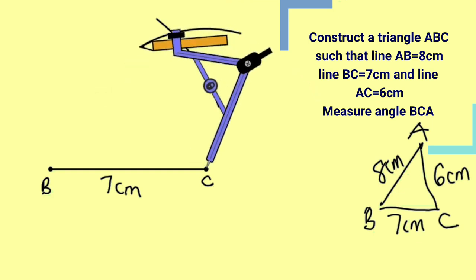Okay, now label the point as point A, this is point A. What you are going to do is to use a ruler, connect point A and B, A and C together.